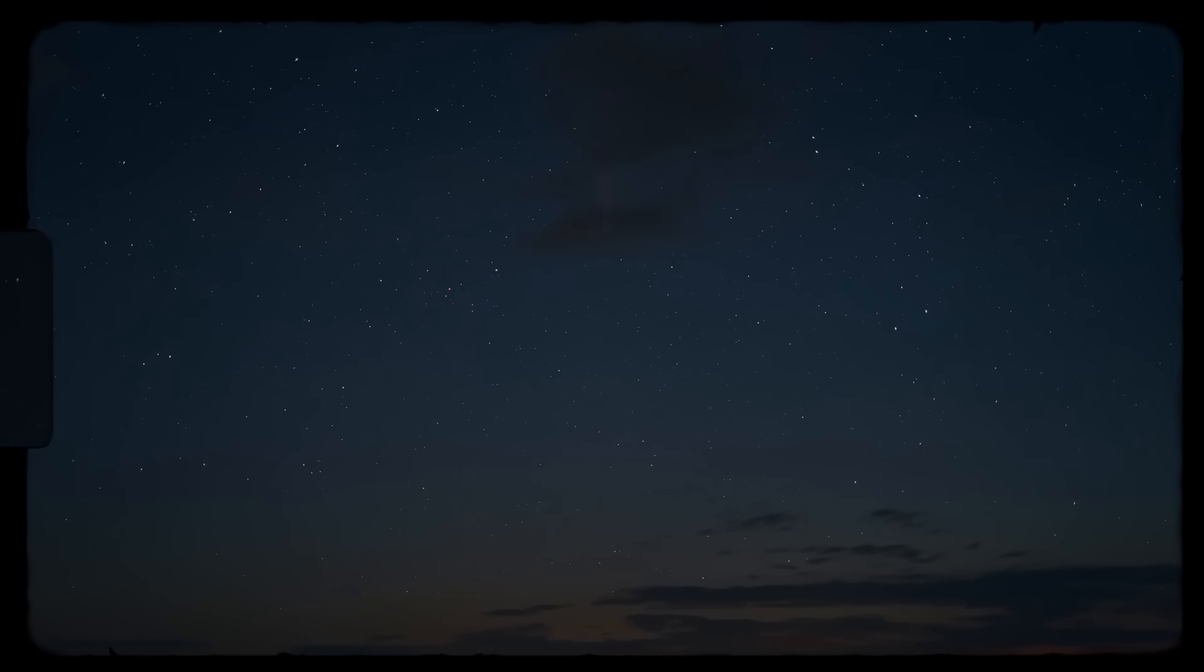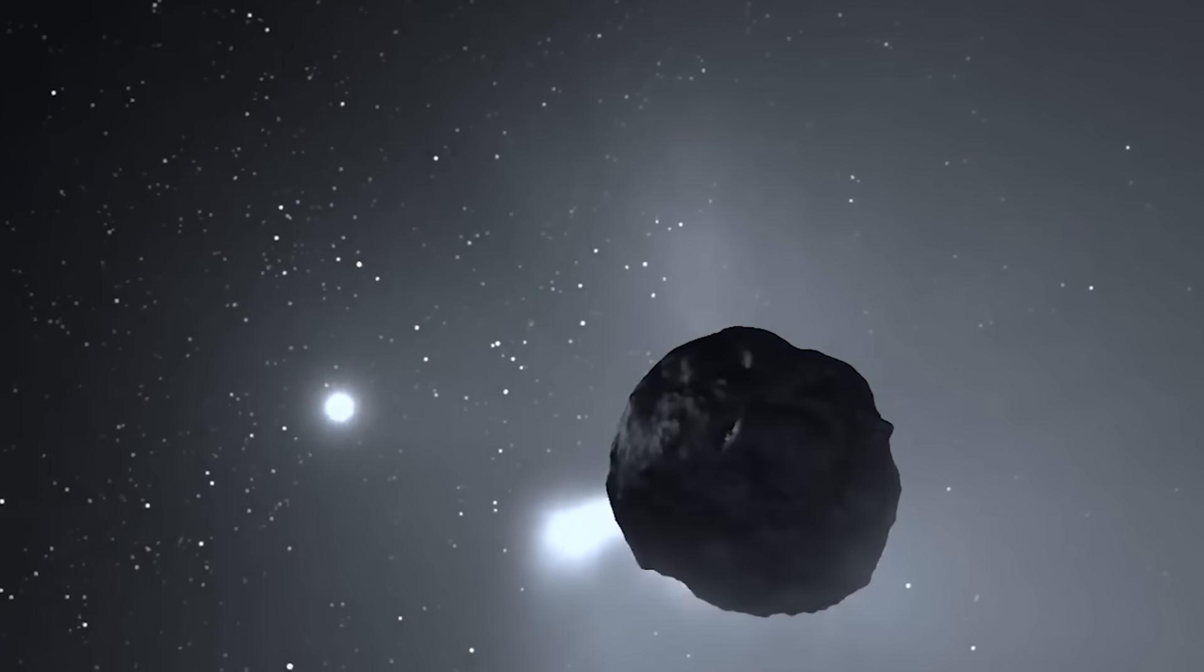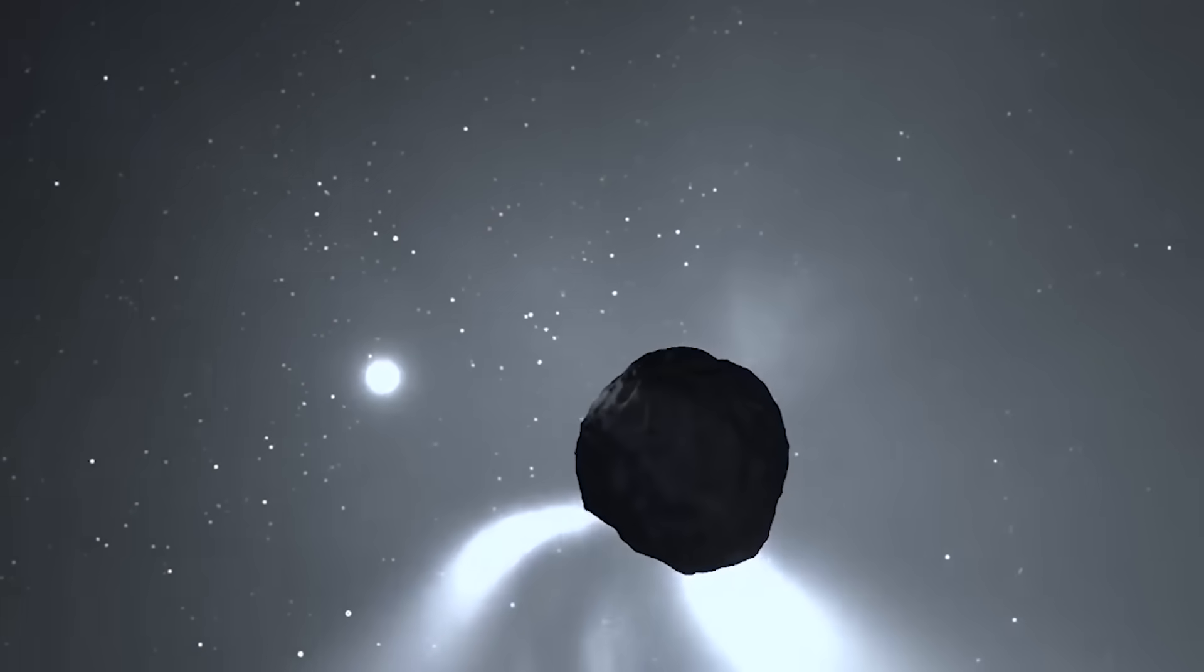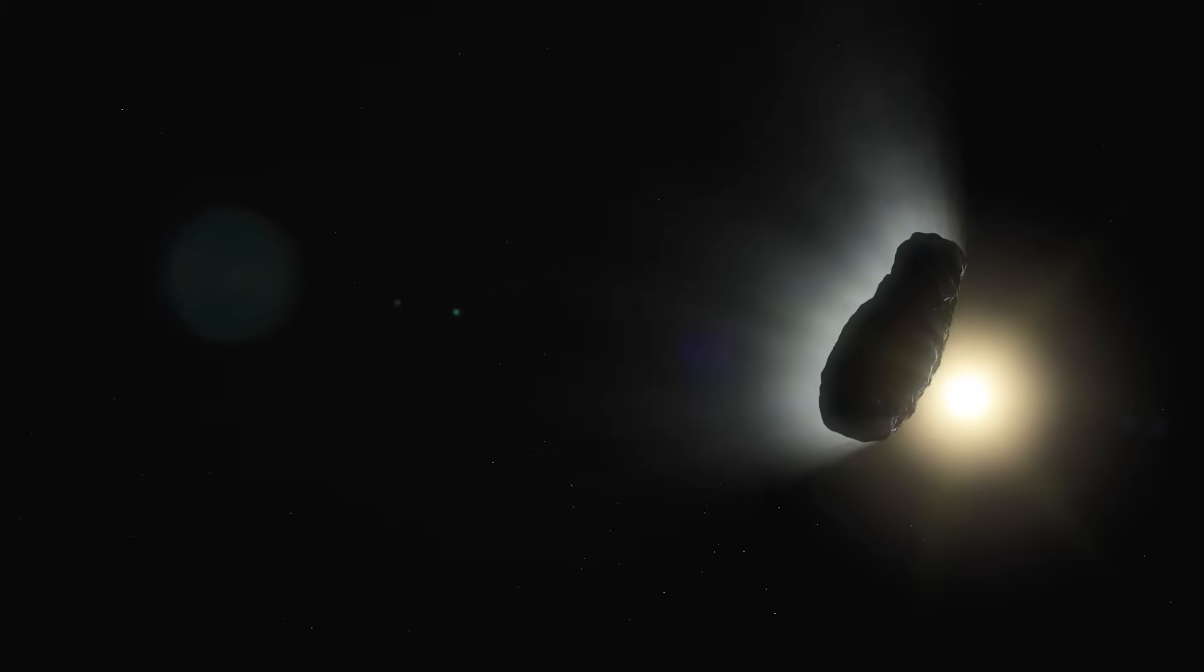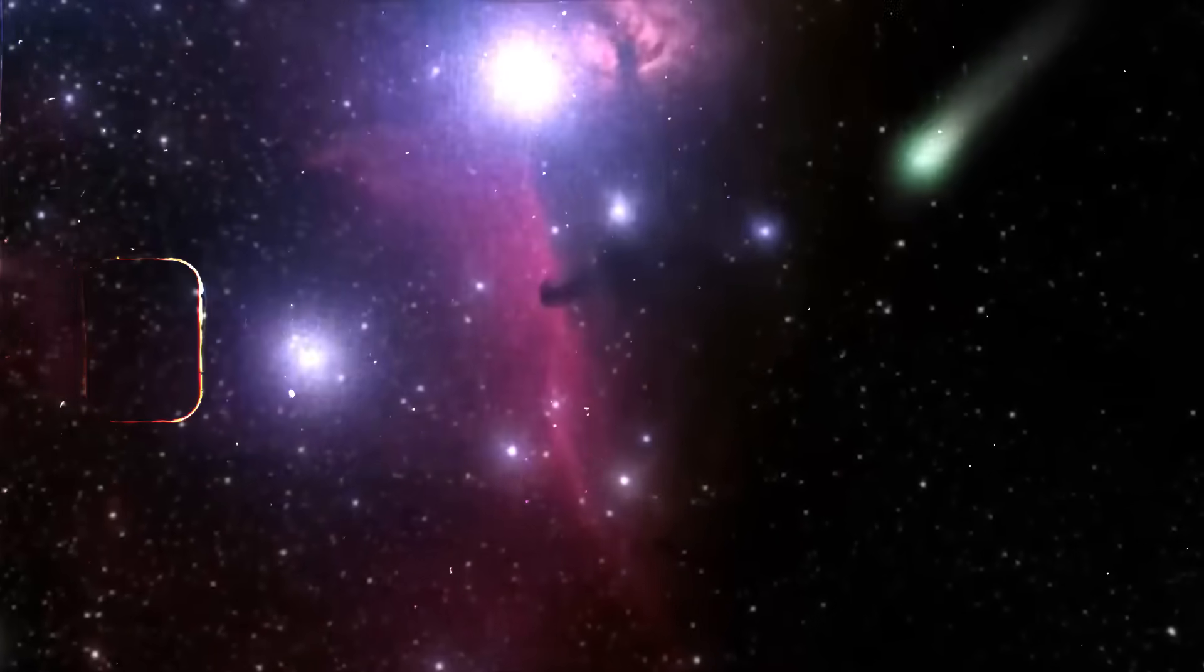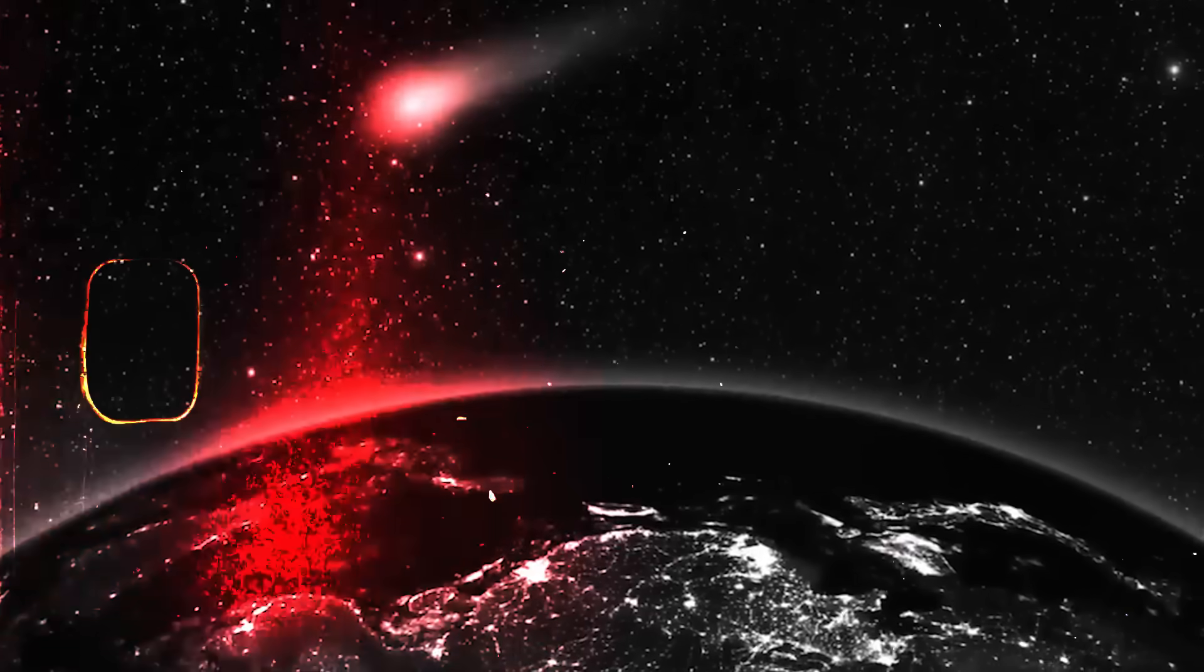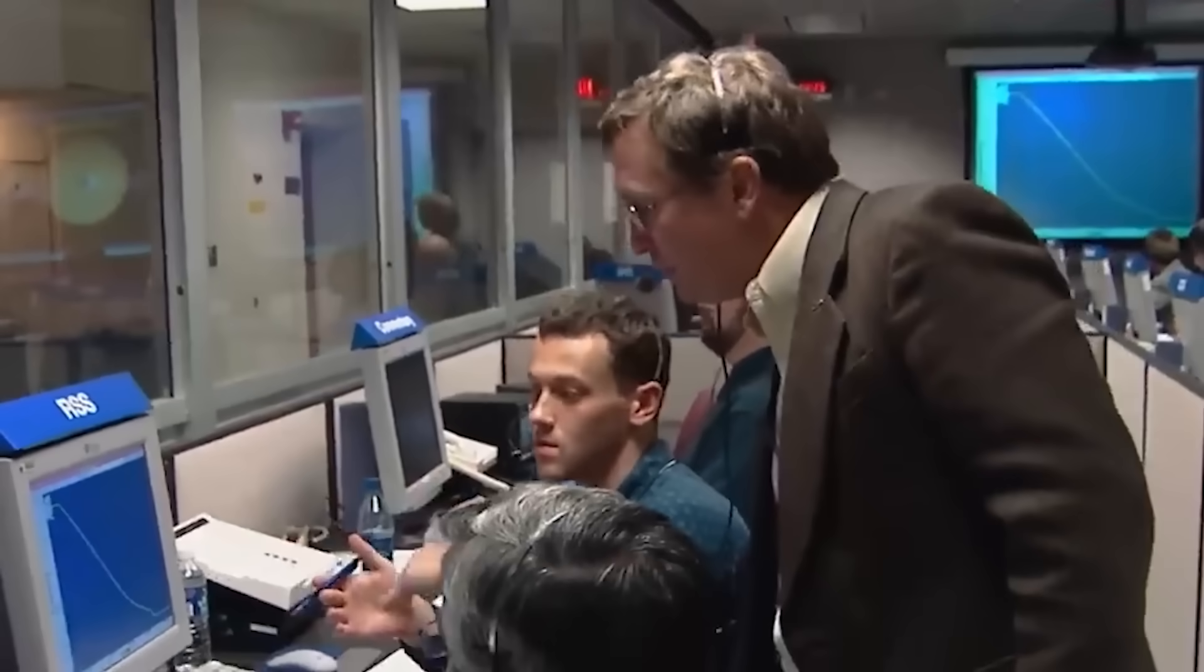But here's the kicker. Even with this tremendous amount of outgassing, the numbers still didn't work. Given the object's immense mass estimated to be many thousands of times greater than Oumuamua, these jets simply lacked the horsepower. The force they generated was far too weak to explain the significant orbital drift being observed. It was like trying to steer a cruise ship with a hand-held fan. The math refused to cooperate.